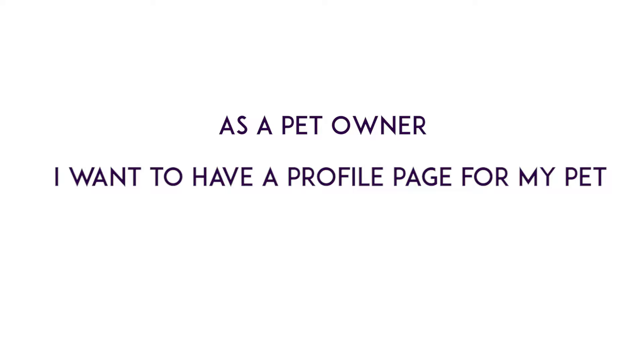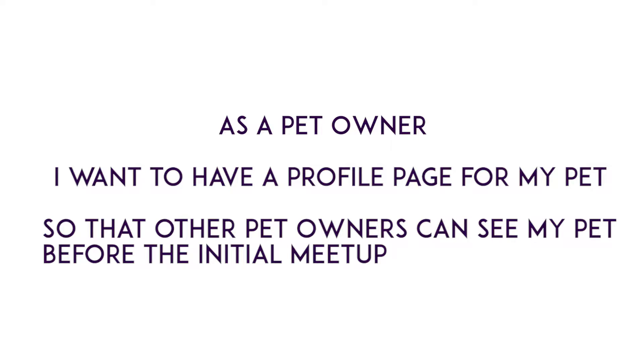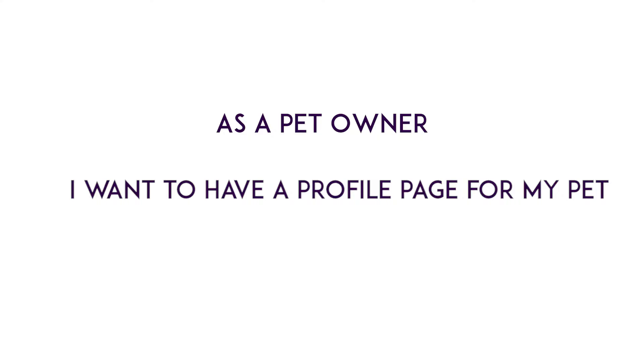Let's say we're building an application for dogs to meet other dogs in their city — let's call it Sniffs and Wolves. This is kind of like Meetup, but for pet owners and dogs. From a user's perspective, a pet owner might want their pet to have a profile page. So a user story might go: as a pet owner — that's the role — I want my pet to have a profile page — that's the what — so that other pet owners can see my pet before the initial meetup — that's the why. Or: as a pet owner, I want my dog to have a profile page so that I can share stories with other pet owners. Does that sound easy? Do you think you can put it into your next project? Tell me how you're going to employ this in the comments below.